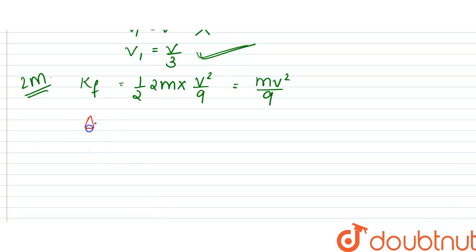that is ΔKE, would be equal to K initial minus K final, which would be equal to mv² minus mv²/9, so that equals 8mv²/9. So that means 8/9 of the original, 8/9 of mv²,